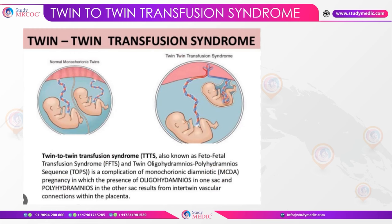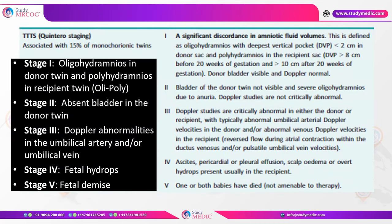Monochorionic twins have specific complications, the most important and most frequently tested being TTTS syndrome, also known as feto-fetal transfusion syndrome or Twin Oligo-Poly Sequence (TOPS). It is peculiar to MCDA pregnancy, with oligohydramnios in one sac and polyhydramnios in the other, caused by an imbalance in vascular connections within the placenta leading to increased perfusion around one twin and reduced amniotic fluid around the other.